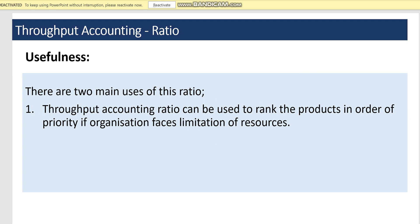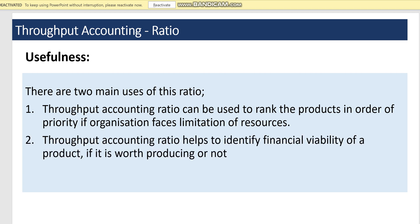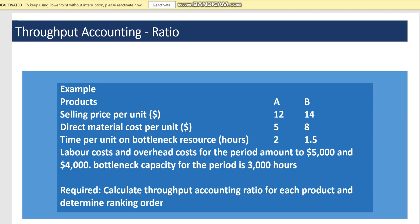The throughput accounting ratio has two important uses. First, it can be used to rank products in order of priority when an organization faces a limitation of resources — a higher ratio means the product is more financially viable, so we rank and produce accordingly. Second, it identifies the financial viability of a product: if the ratio is one or above, the product is considered financially viable; if it is less than one, it is not viable on financial grounds.